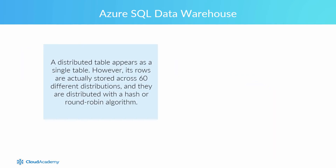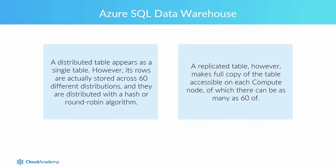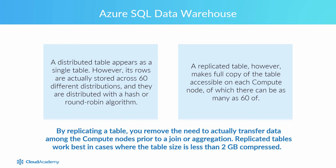You can configure distributed tables or replicated tables. A distributed table appears as a single table; however, its rows are actually stored across 60 different distributions, and they are distributed with a hash or round-robin algorithm. A replicated table, however, makes a full copy of the table accessible on each compute node, of which there can be as many as 60. By replicating a table, you remove the need to transfer data among the compute nodes prior to a join or aggregation.